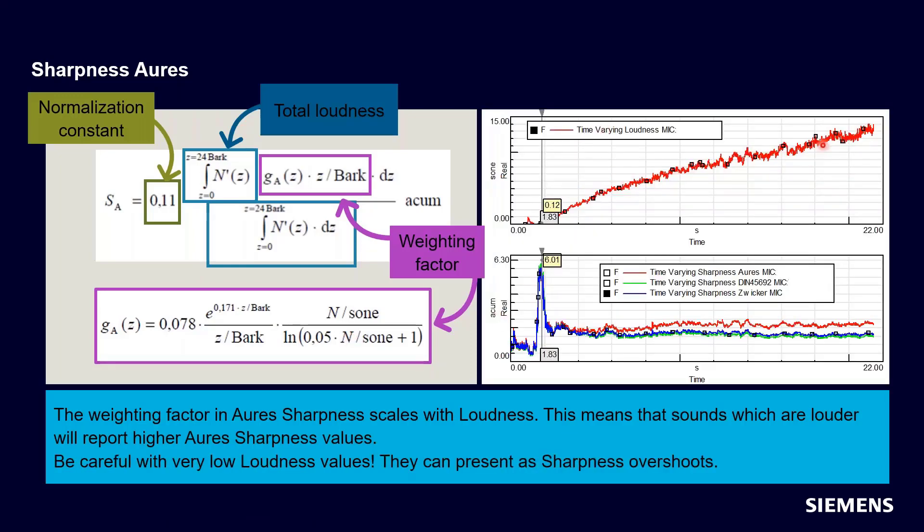So if I take this signal shown here in the red in the top part of this graph, you see the SOME value, the loudness, increases over the 20 seconds. And I compare Aures's sharpness in red down here to the blue and green are DIN and Zwicker sharpness. And you see the blue and the green remain constant in terms of their sharpness calculation, even though the loudness is increasing here. But the Aures's sharpness starts out right in line with the blue and the green, but then gets louder and they're more and more sharp as the signal gets louder. So you see the effect of the increased loudness in the increased sharpness.